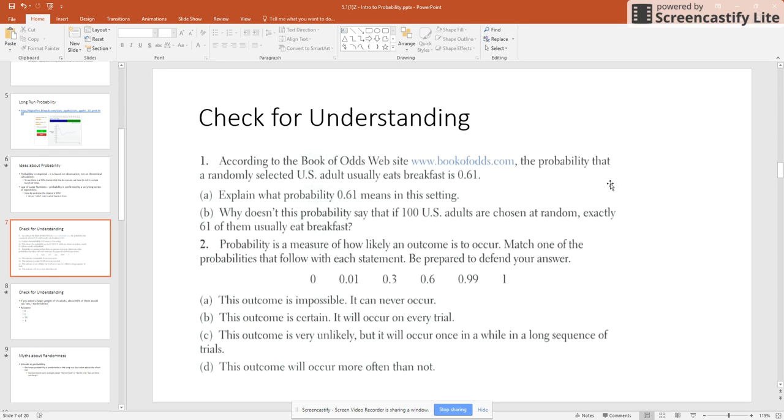Part B, the outcome is certain. It will occur on every trial. I am guaranteeing that this outcome is going to occur every single time. Well, that's going to happen. That means it's going to happen 100%. So my probability there is one.